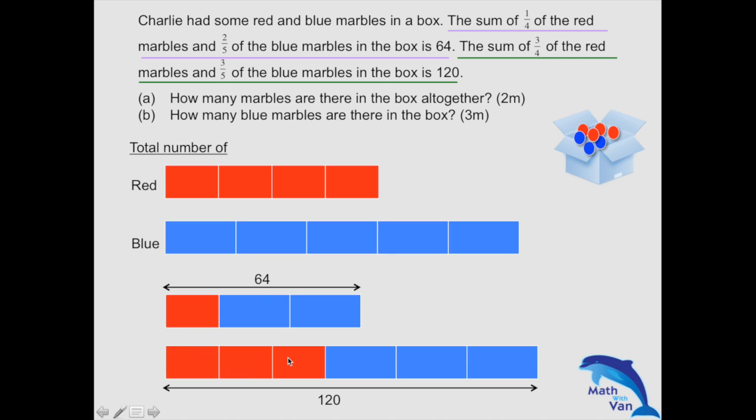One, two, three, four. Four red and five blue. So you could have answered part A easily, getting the two marks, which is 120.